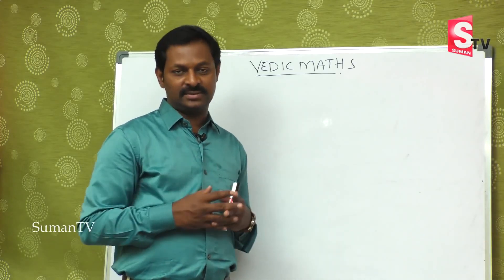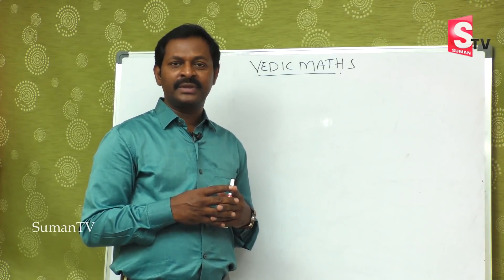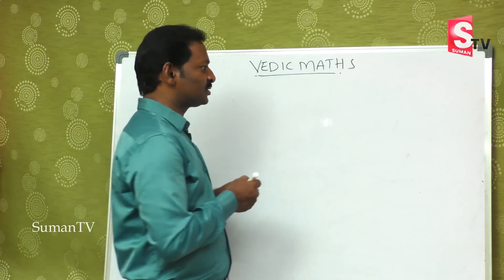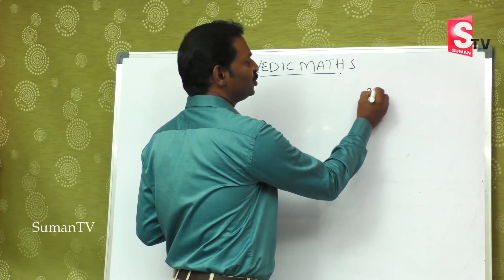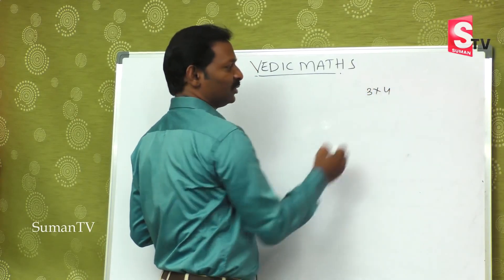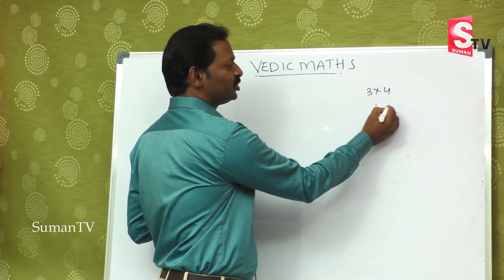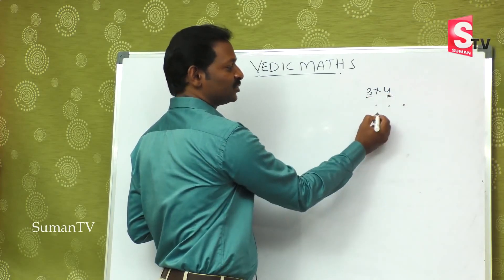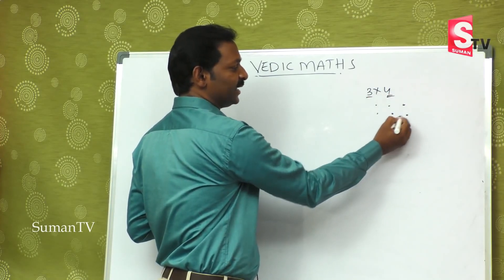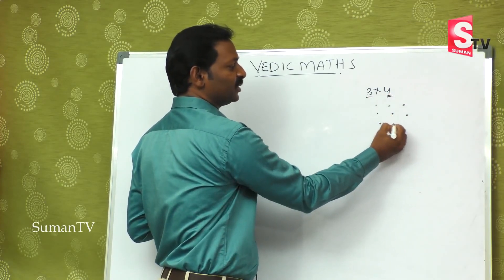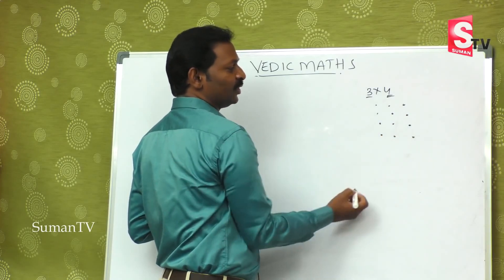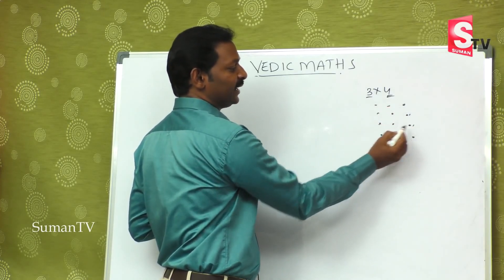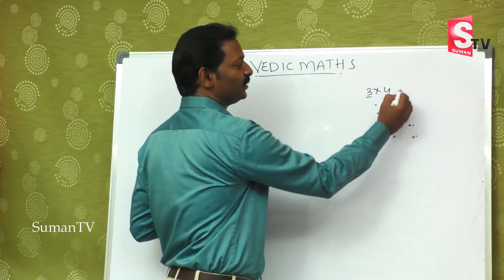Previously in the multiplication column, suppose 3 into 4. We count 3, four times: first time, second time, third time and fourth time — counting 1, 2, 3, 4, 5, 6, 7, 8, 9, 10, 11, 12 — is equal to 12.